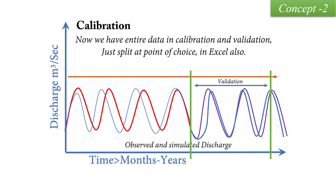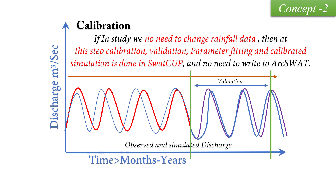So now we have the entire data in calibration and validation. If in a study we do not need to change the rainfall data, then at this step — calibration, validation, parameter fitting, and calibrated simulation — all of this is done in SWAT-CUP, and most of our work is finished there. We receive the fitted parameters, the model that runs with fitted parameters, and a calibrated simulation — all from SWAT-CUP.